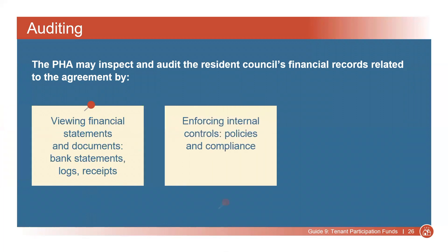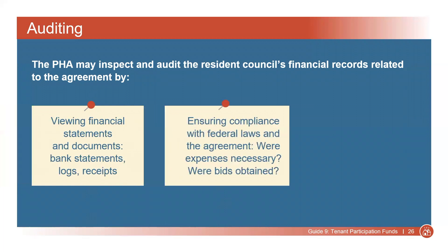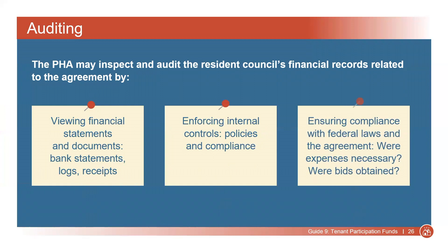Second, internal controls: do policies exist and were they followed? For example, did two officers sign each check? And third, compliance with federal laws and the agreement: were expenses necessary for meeting the resident council's mission? And were three bids obtained for high-cost purchases?